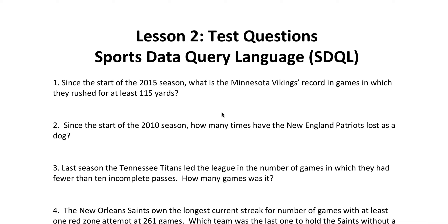This is question two on Lesson 2 test. Since the start of the 2010 season, how many times have the New England Patriots lost as an underdog? We're going to set the season to at least 2010, the team to the Patriots. We're going to use capital L for a loss and capital D for a dog. It looks like four parameters.